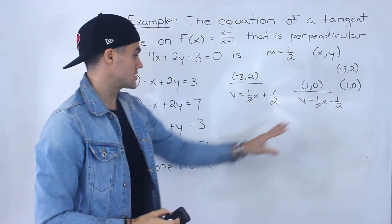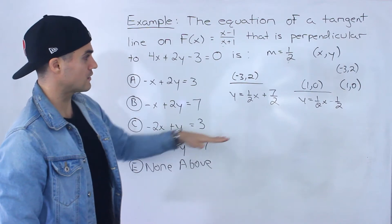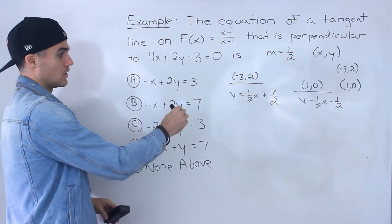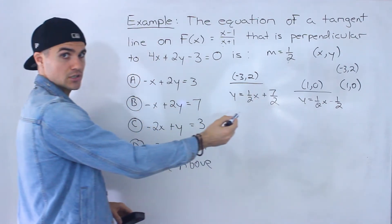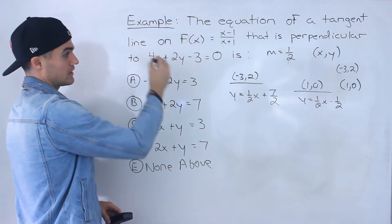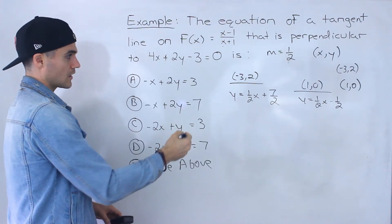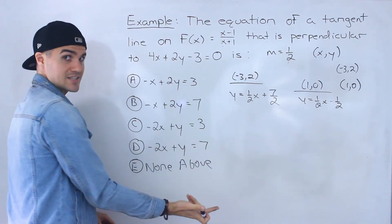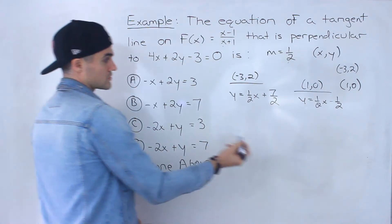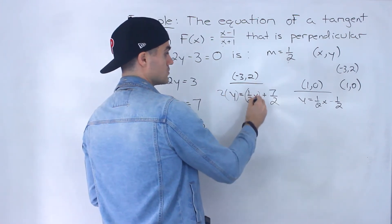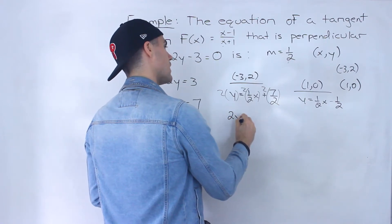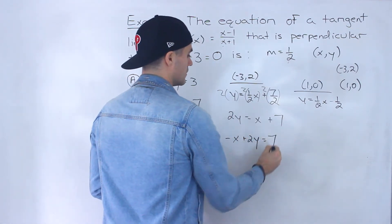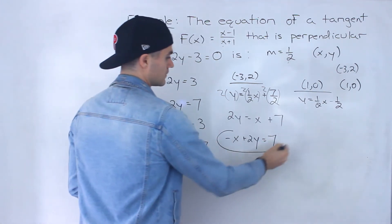Those are the two equations of the tangents. Notice the answer choices are in standard form, while we have y equals mx plus b form. We need to convert. Multiply the first equation by 2: 2y equals x plus 7. Bring the x over: negative x plus 2y equals 7. Notice that matches one of the answer choices — so that's actually the answer.